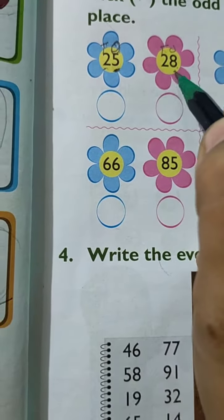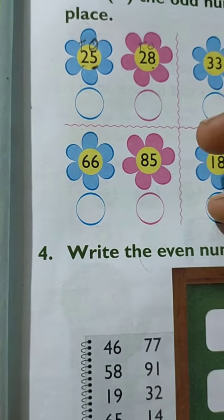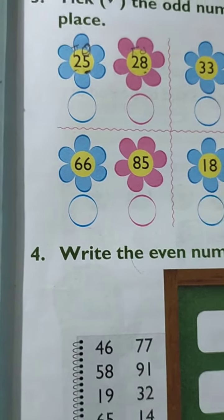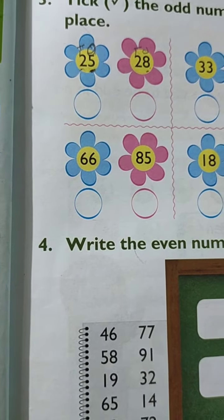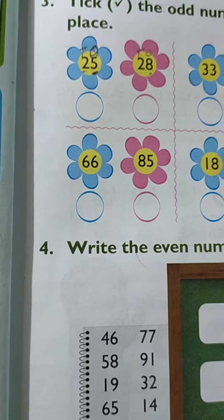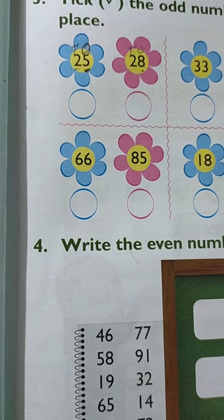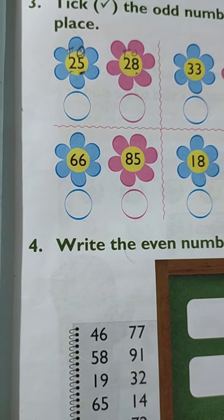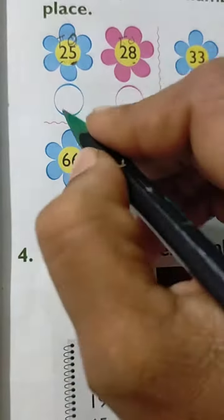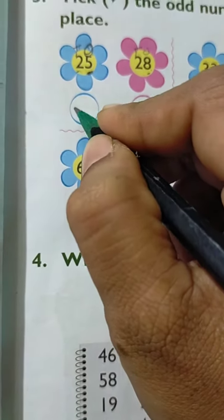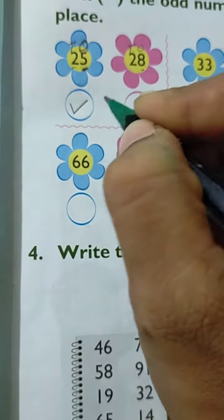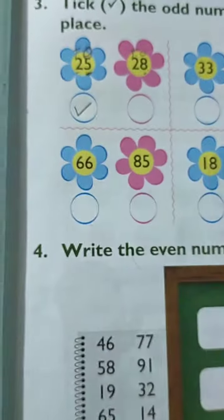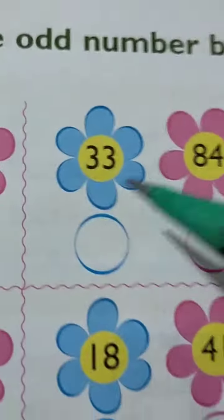So you have to know odd or even numbers. Odd numbers are: one, three, five, seven, nine. Five is an odd number, so here on the odd number you have to put a tick mark.